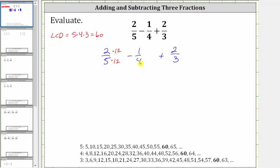Since four times 15 is 60, we multiply the numerator and denominator of 1 fourths by 15.